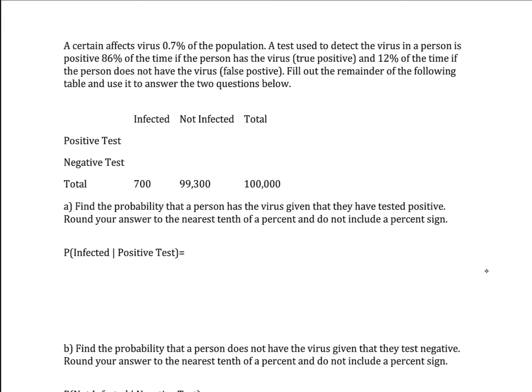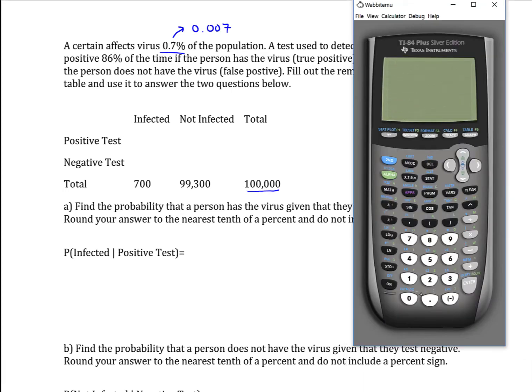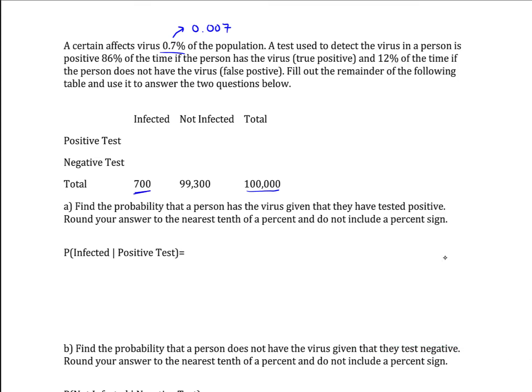Fill out the remainder of the following table and use it to answer the two questions below. We have a population size of 100,000. Taking 0.7%, which is the decimal value 0.007, times 100,000 gives us 700. So that's the number of people that are actually infected.